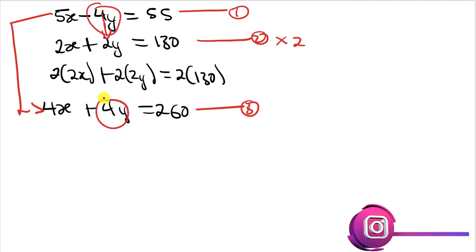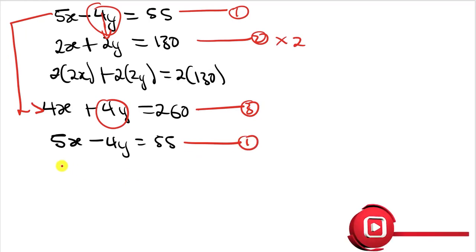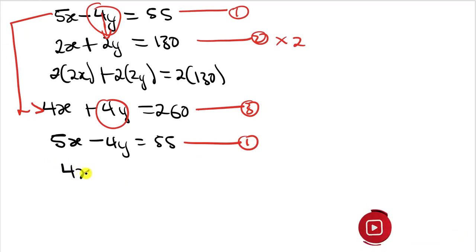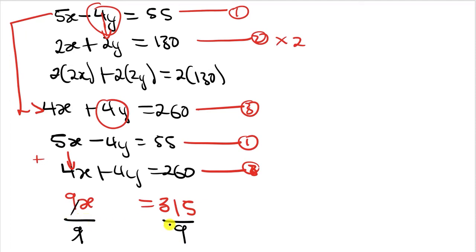Now I will use equation 1 and equation 3, since the numerical coefficients of Y are the same. I am going to add the two equations. Equation 1: 5X minus 4Y equals 55. Equation 3: 4X plus 4Y equals 260. Adding: 5X plus 4X gives 9X, minus 4Y plus 4Y gives 0, and 55 plus 260 gives 315. So 9X equals 315. Dividing both sides by 9, we get X equals 35.